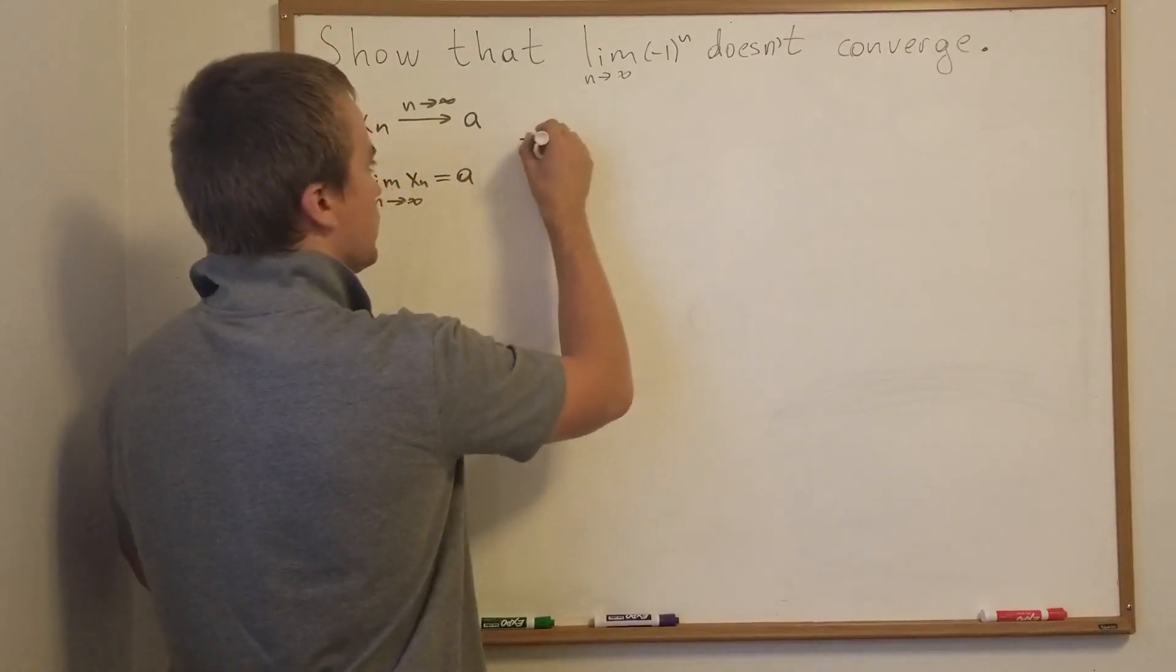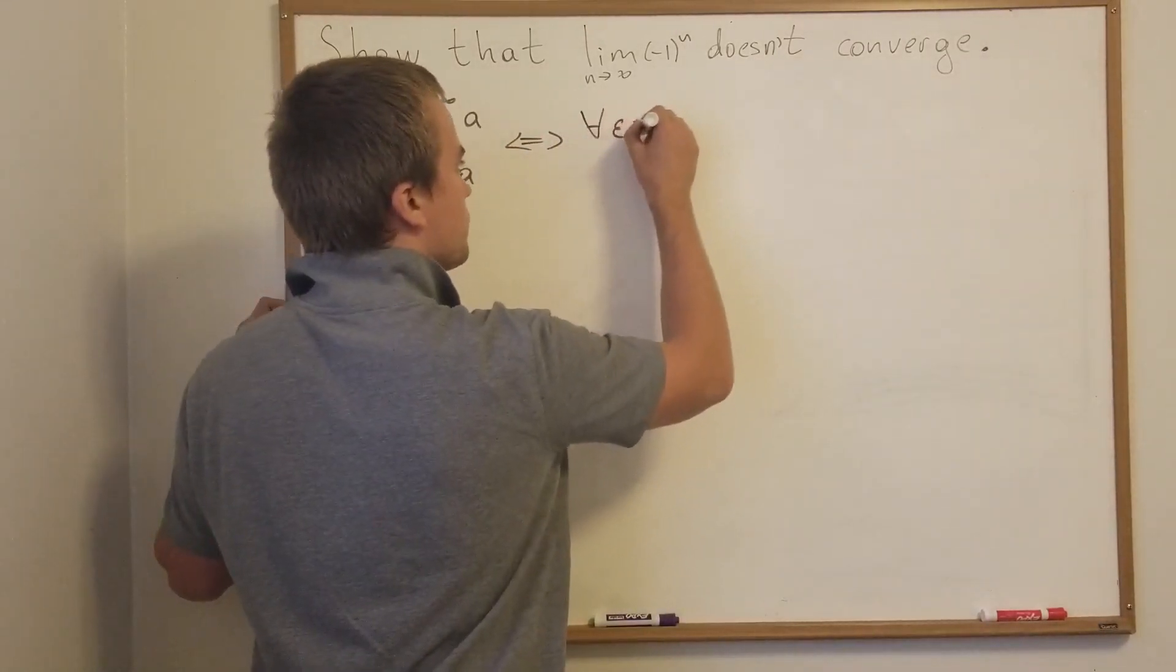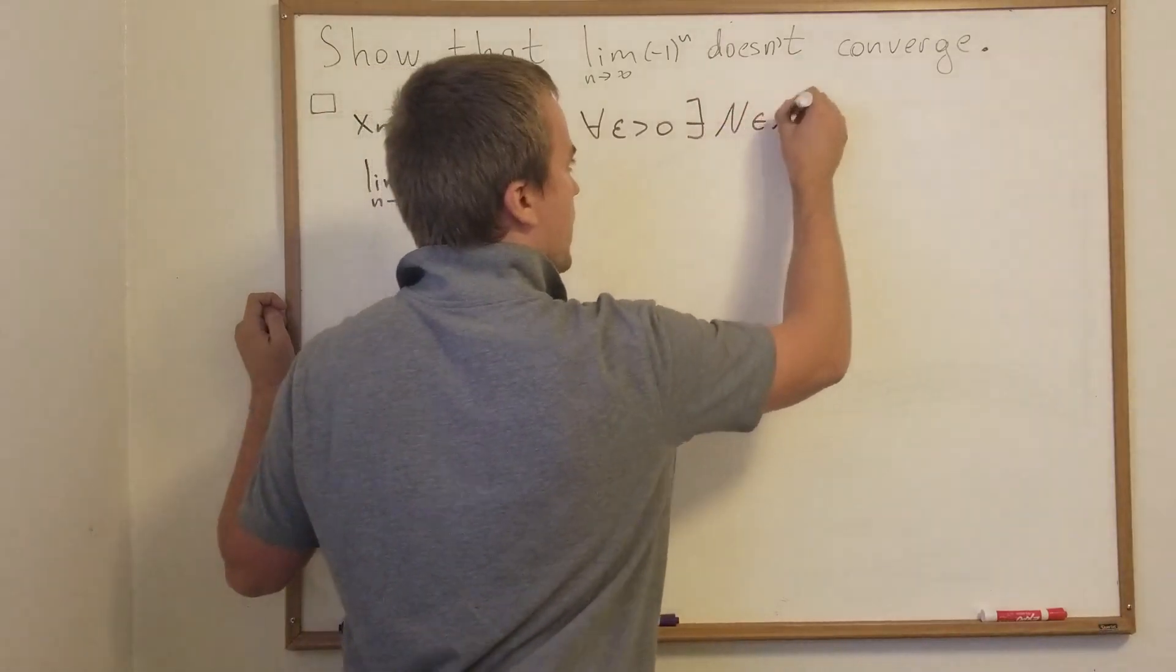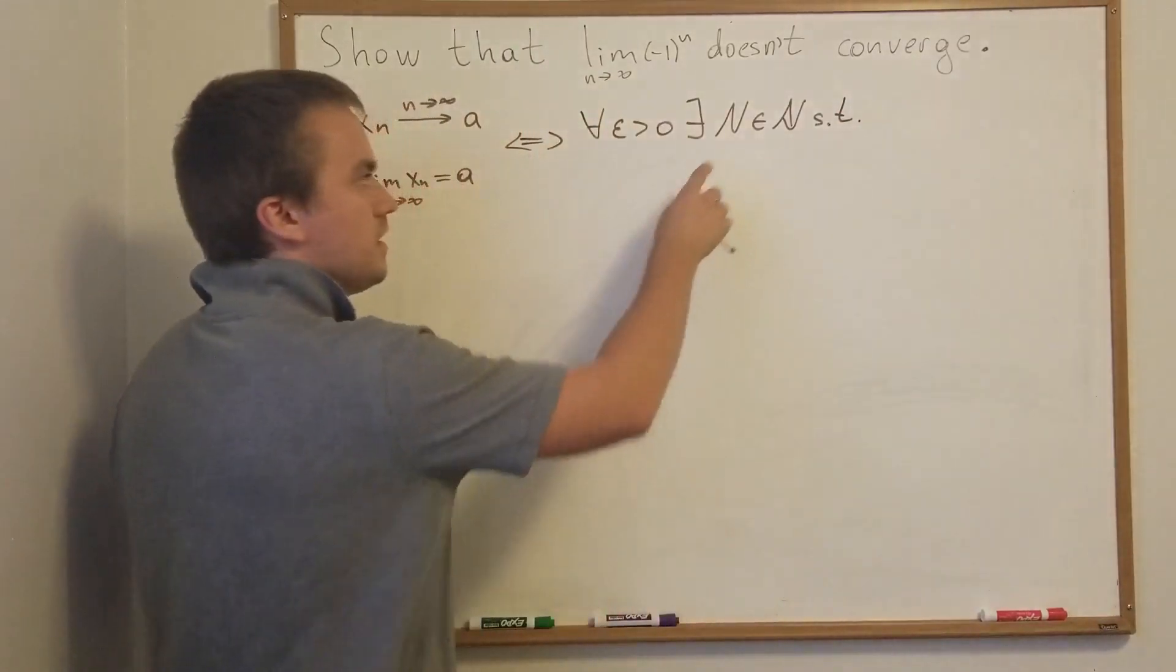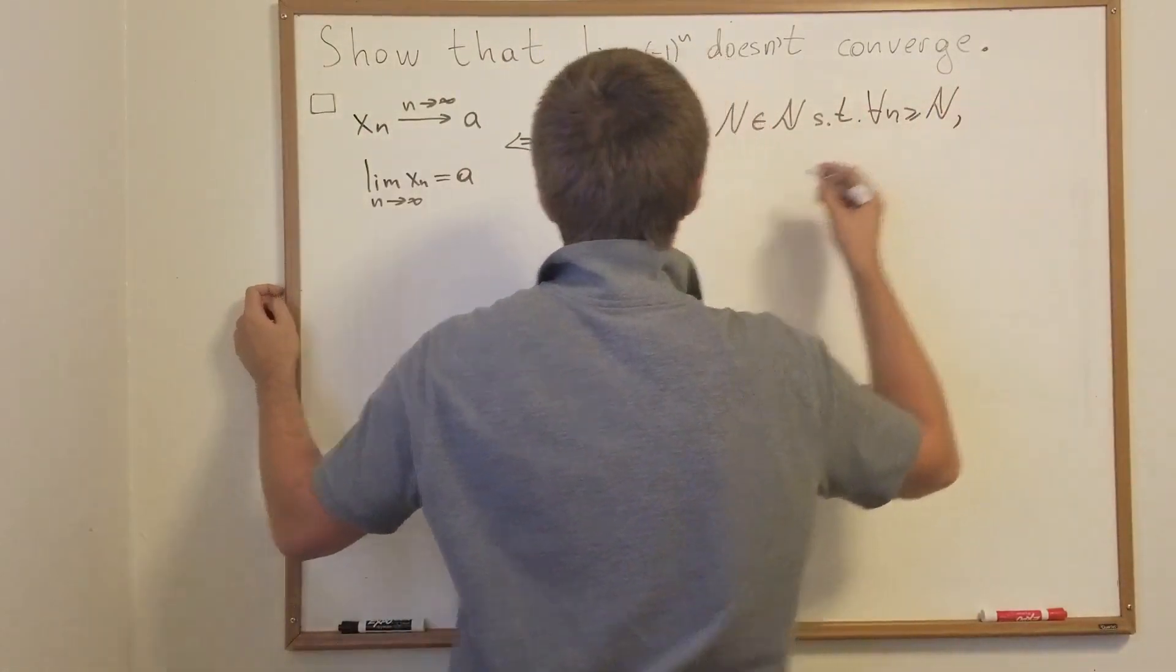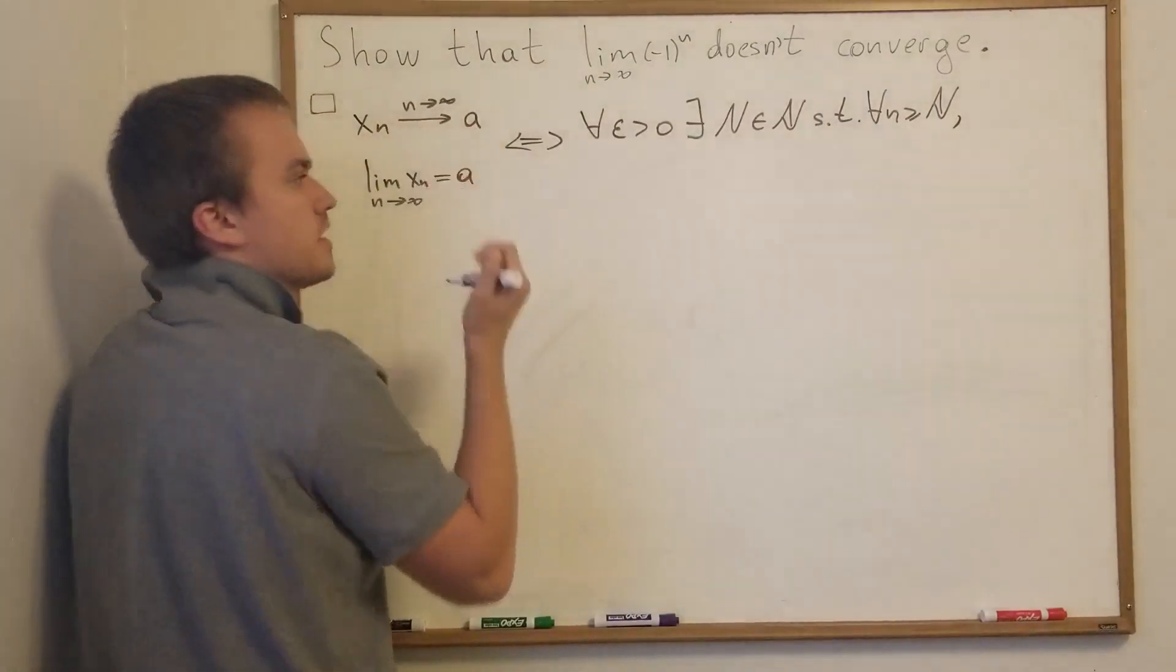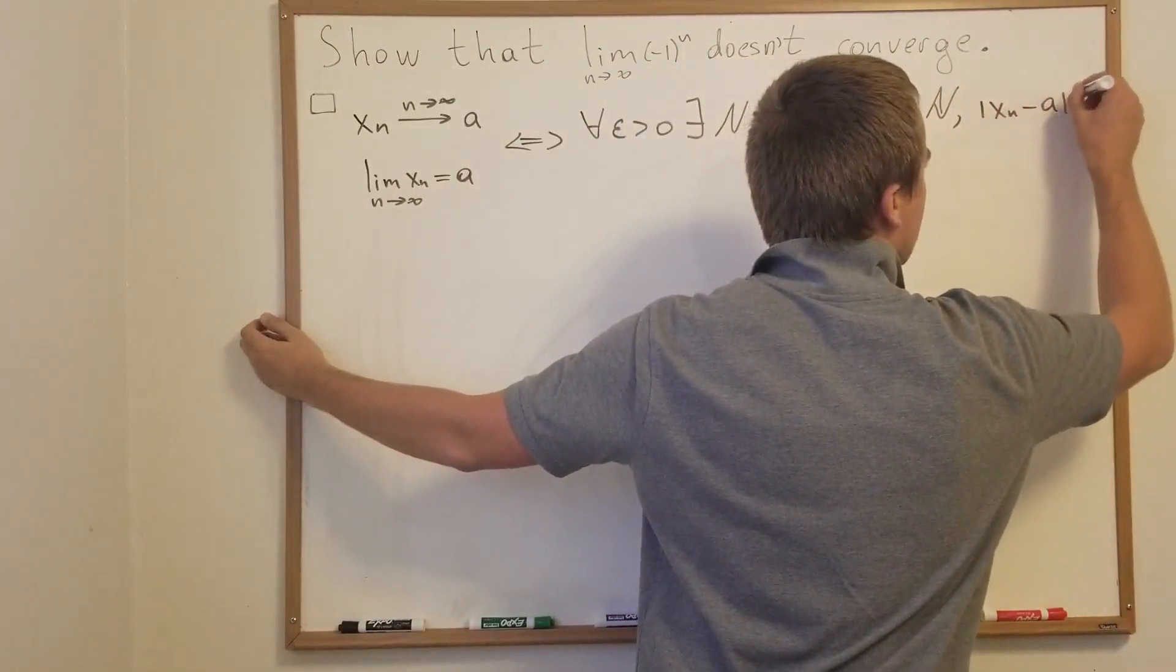This is equivalent to saying that for any epsilon bigger than zero, there exists some natural number N such that if you take any n bigger than N, then we know that the absolute value of the difference between xn and a is less than epsilon. So xn minus a is less than epsilon.